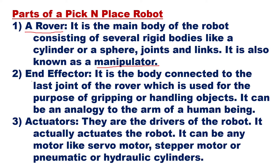The second part is the end effector, located at the end of the arm. It is the body connected to the last joint of the rover — the manipulator — and is used for gripping or handling objects. It can be thought of as analogous to the arm of a human being.